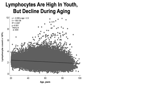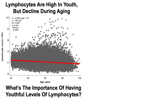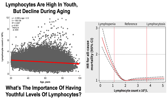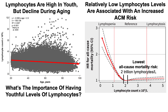Similarly, lymphocytes are high in youth but also decline during aging. Looking at levels of lymphocytes on the y-axis plotted versus age up to 100 years: lymphocytes decline during aging. Just like the albumin data, the lowest all-cause mortality risk is associated with having 2 trillion lymphocytes per liter. But as lymphocyte levels decline, we again see significantly increased all-cause mortality risk.